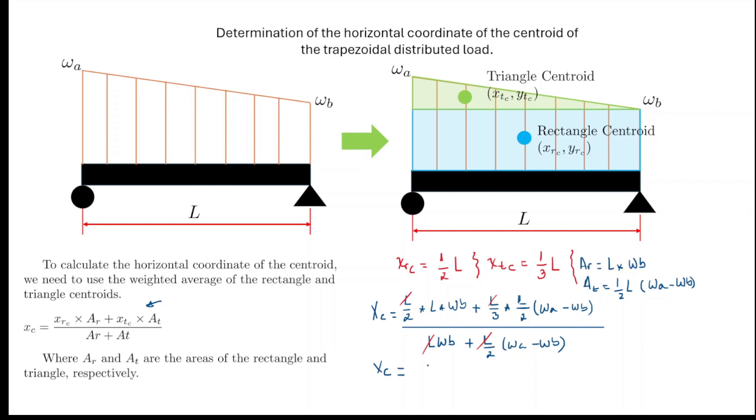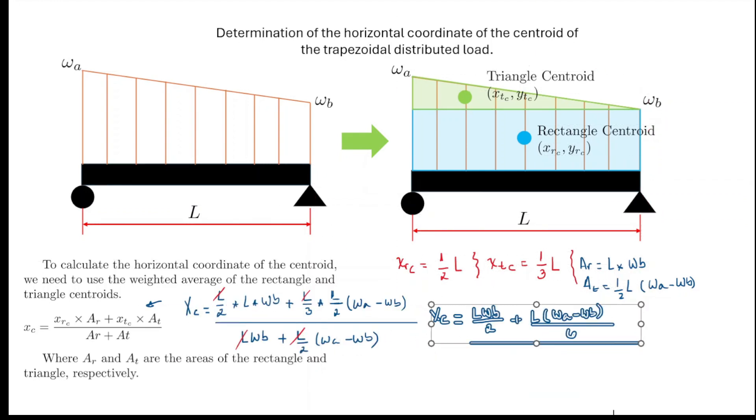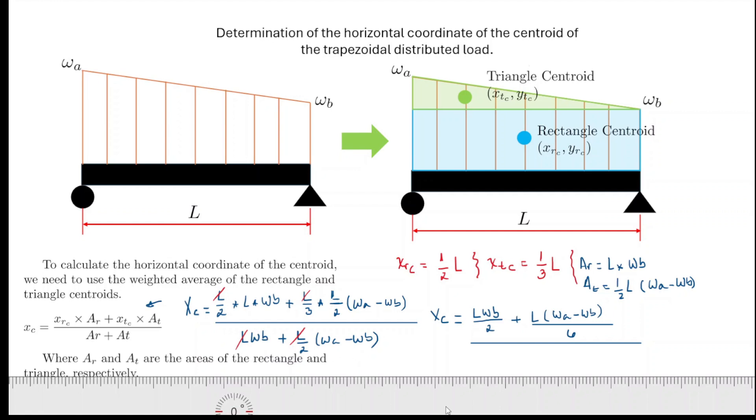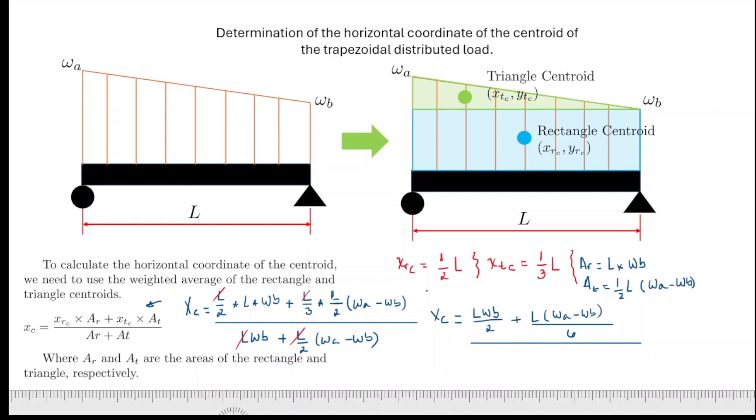XC, I'm just going to write it out, it's going to be L WB/2 plus L that multiplies (WA - WB)/6. And all of that is going to be divided by, we try to move this to a different position. And then this is going to be divided by this one here. But I can already multiply some factors there. So this is going to be equal to 2WB plus (WA - WB)/2.